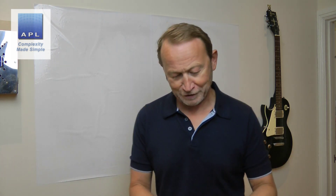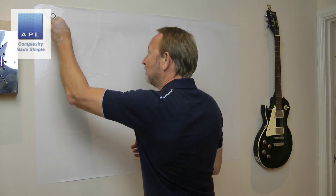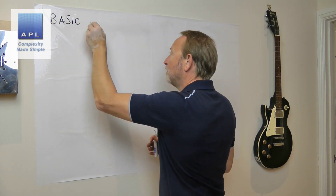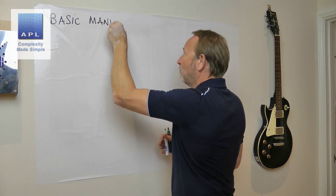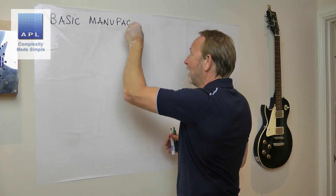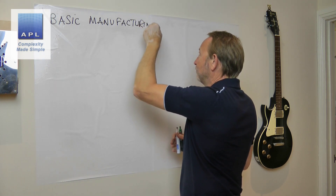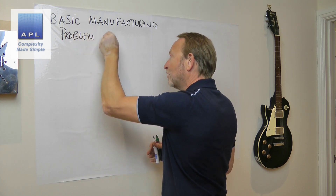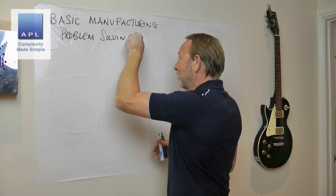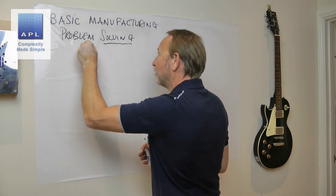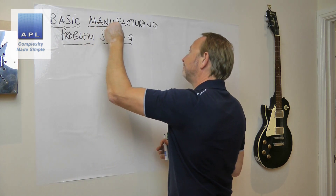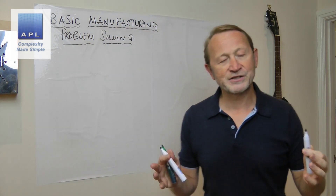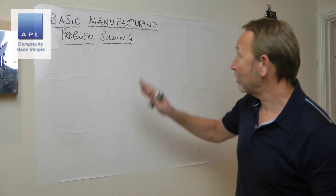Welcome to the latest video. In this video we're going to take a look at some basic manufacturing problem solving. It is basic — having said that, this could be your 8D problem solving, it could be your A3, basic manufacturing, or it could be your Six Sigma project. What I'm about to show you fits in all of those different scenarios, because what we are looking at is the basic physics of your process.